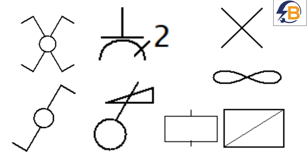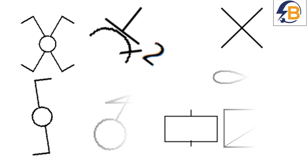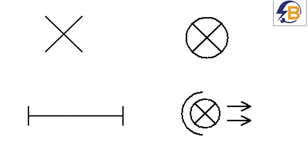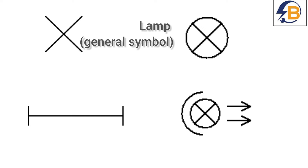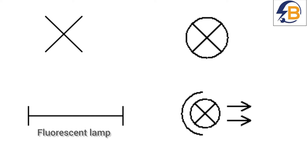We'll start with the most basic items and look at a few of them. First of all, let's start with lamps or lights. In drawing, these are the symbols that we use to represent lamps. These two are usually used to represent the general symbol for a lamp, and they are normally used interchangeably to represent lamp in general or light. This symbol represents a fluorescent lamp.